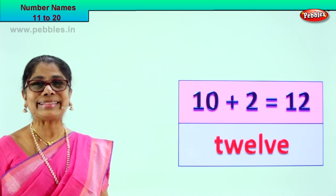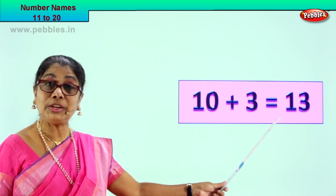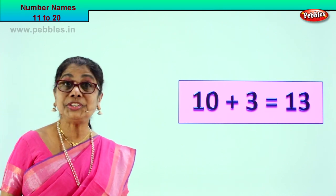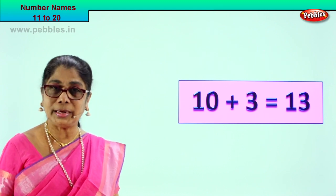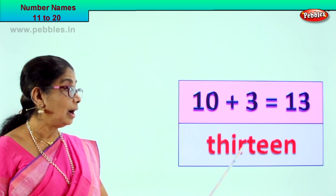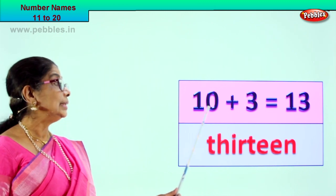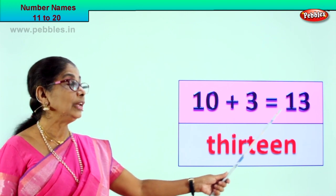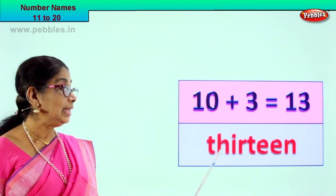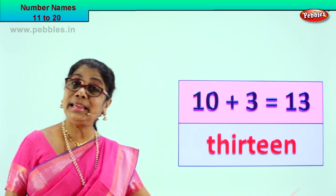Let's take our next exercise. Look what you have here. 10 plus 3 is equal to 13. How do we write 13 in words? 10 plus 3 is equal to 13, and here we learn to write 13 in words. Spell again — T, H, I, R, T, E, E, N. 13. Very good!